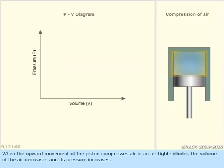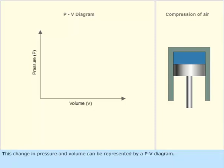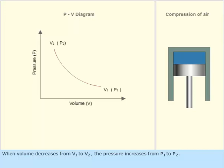When the upward movement of the piston compresses air in an airtight cylinder, the volume of the air decreases and its pressure increases. This change in pressure and volume can be represented by a PV diagram. When volume decreases from V1 to V2, the pressure increases from P1 to P2.